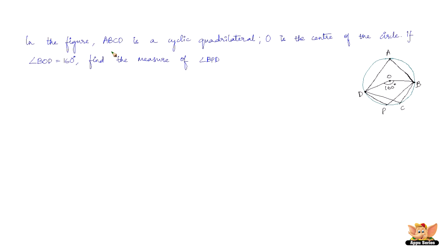In the given figure, ABCD is a cyclic quadrilateral and O is the center of the circle. If angle BOD equals 160 degrees, find the measure of angle BPD. The angle subtended by an arc at the center of a circle is double the angle subtended at the circumference. So angle BAD equals half of angle BOD, which equals 80 degrees.